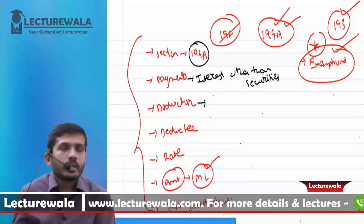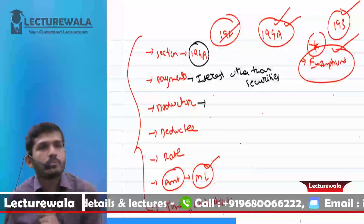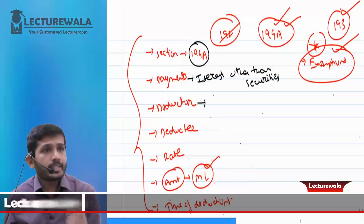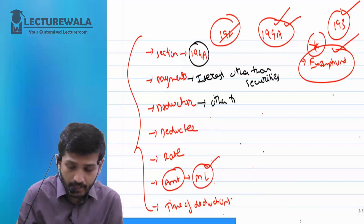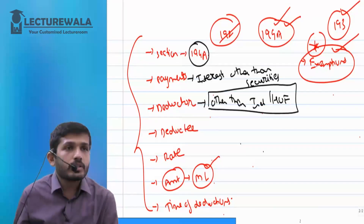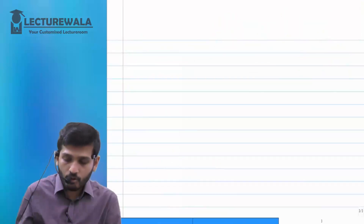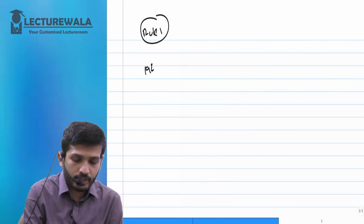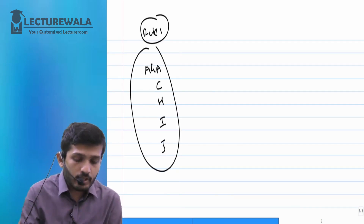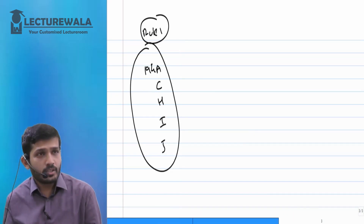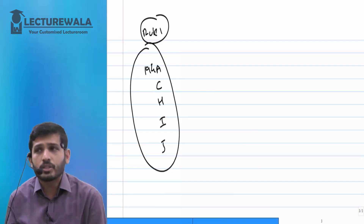Now, who should be the deductor? We will remember this in two clauses that apply across sections. First is 'any person' — it doesn't matter who, anyone can be the deductor. Second category is 'any person other than individual or HUF.' So all are covered, but individual and HUF are excluded. This is Golden Rule Number 1: the 'other than individual or HUF' clause applies only in five sections — 194A, 194C, 194H, 194I, and 194J. These are your most common sections. Only in these sections will you find the 'other than individual or HUF' clause. In all remaining cases, it will be 'any person.'